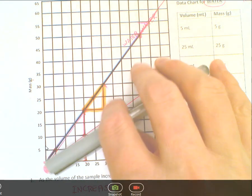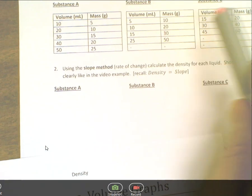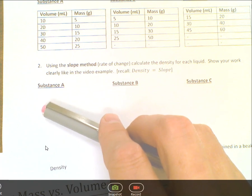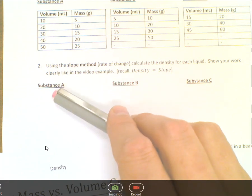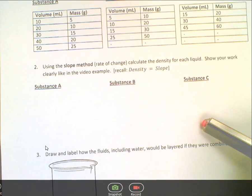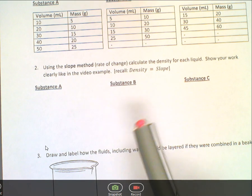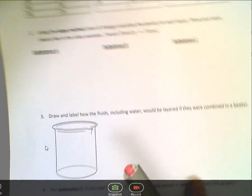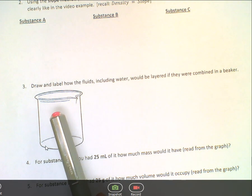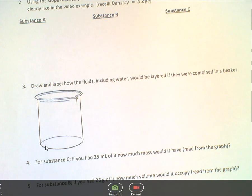So what you're going to do is complete the graphing for substance A, B, and C. And then using the slope equals rise over run, you're going to calculate in grams per milliliter the density for each substance. And recall that slope is equal to the density in this case. Then you're going to draw how, if they were not soluble with each other, how they would layer since they're all liquids in this case. And then answer the two questions below. That's your task.